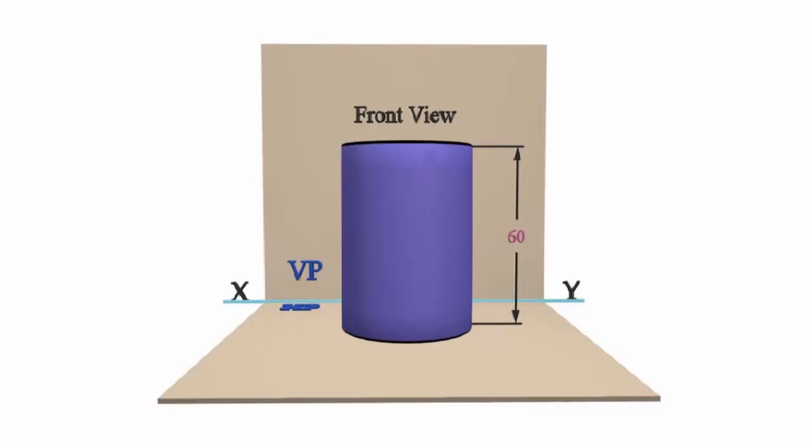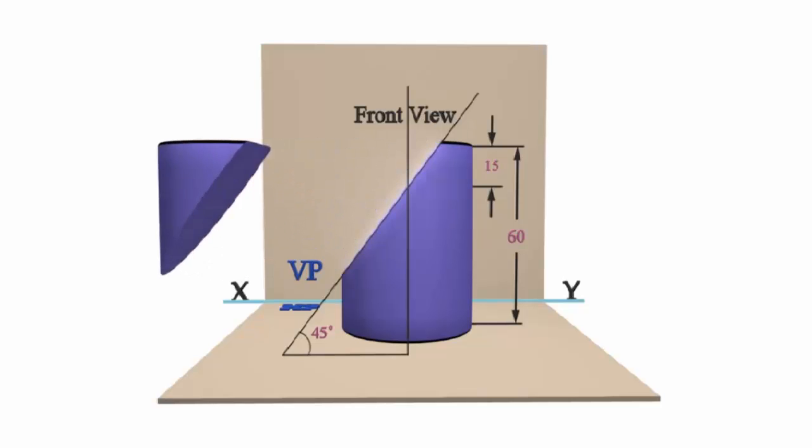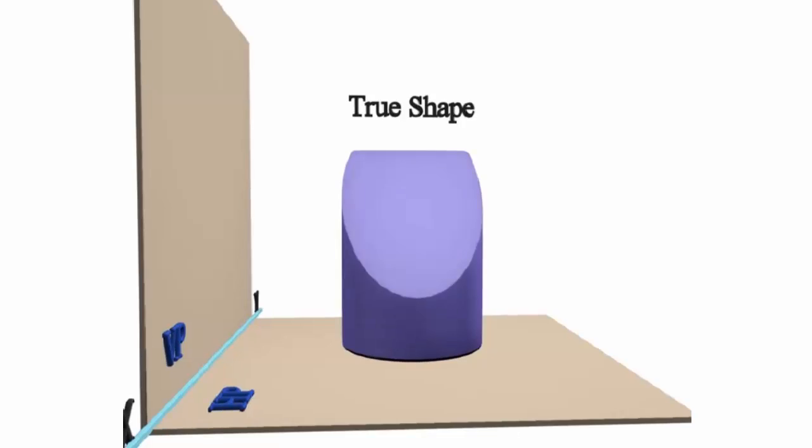It is cut by a section plane which is perpendicular to VP, inclined at 45 degrees to the HP and meeting the axis at a distance of 15 mm from the top. We need to draw the sectional plan and true shape of the section.